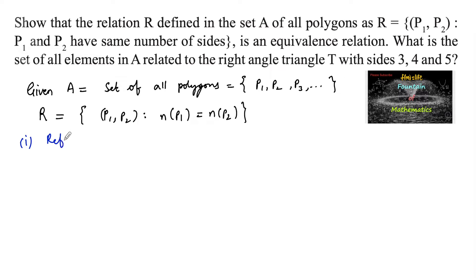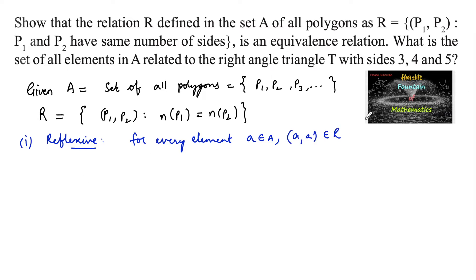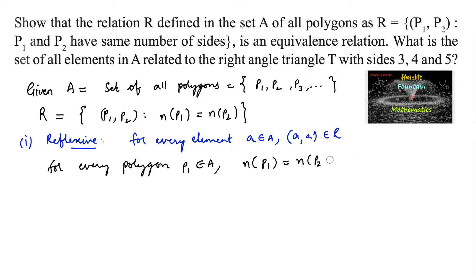First, reflexive. The condition for reflexive is: for every element a belonging to A, (a, a) must belong to relation R. For every polygon p1 belonging to A, the number of sides in polygon p1 is the same as the number of sides in polygon p1. Two equal polygons will have the same number of sides, which implies that (p1, p1) belongs to R. Hence, R is reflexive.